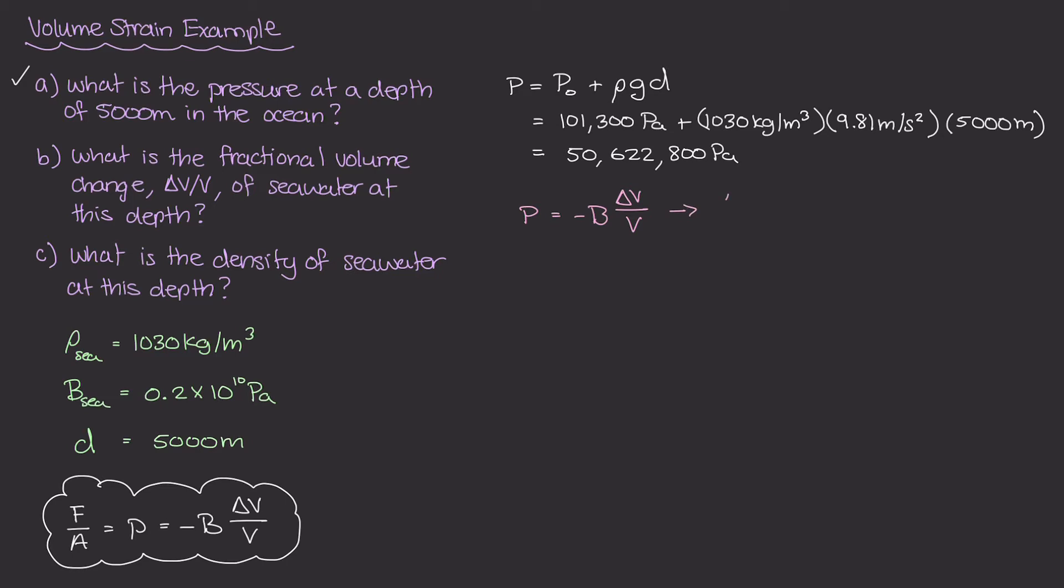the change in volume over the original volume is equal to negative pressure divided by b, our bulk modulus. Now I can take the pressure that we found up here, as well as our bulk modulus of seawater, plug them in here, and that will give us our delta V over V.